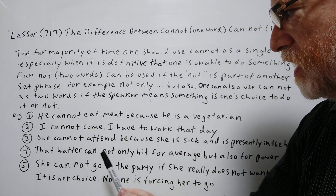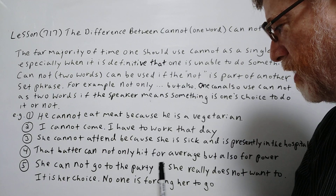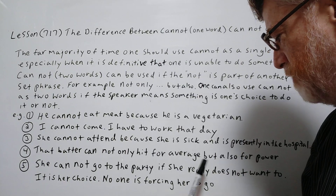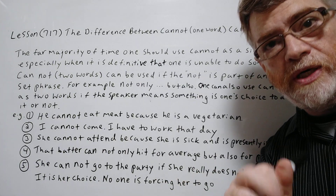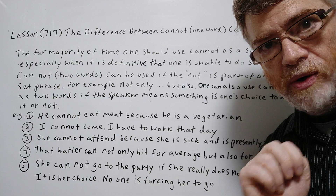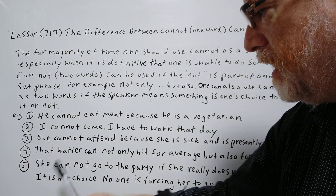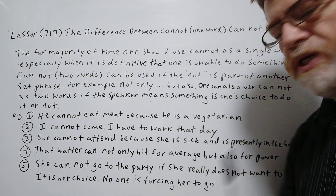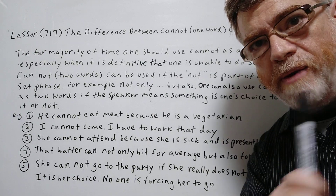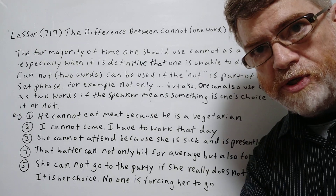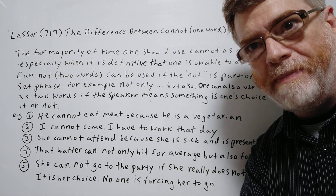Number five: 'She can not go to the party if she really does not want to.' This is the one where it's her choice, so this could be two words. It is her choice — no one is forcing her to go. I hope you got it. I hope it's clear and very informative. Thank you for your time.